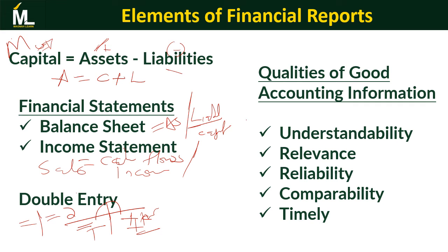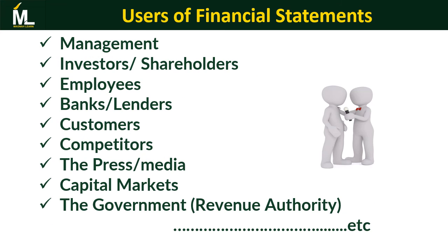Comparability means that if two different people prepare financial information from the same data for the same organization, they should arrive at the same output. Timeliness means that if information is needed for one year, it should be for that year — if it is needed today, information that arrives late may no longer be useful.